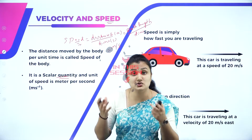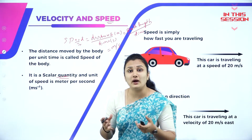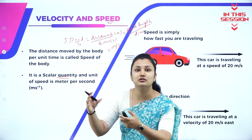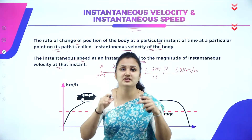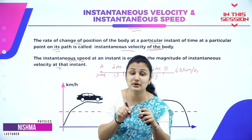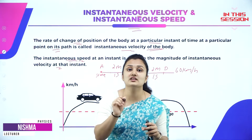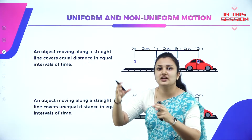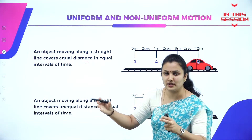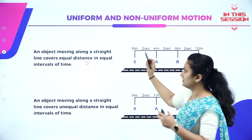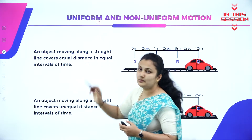What do you mean by scalar quantity? Scalar quantity means it depends on magnitude; it is independent of direction. When I stop at a traffic signal at that particular instant of time, what is my velocity? That is instantaneous velocity. Every two seconds the car is moving, covering equal distance — that is uniform motion.